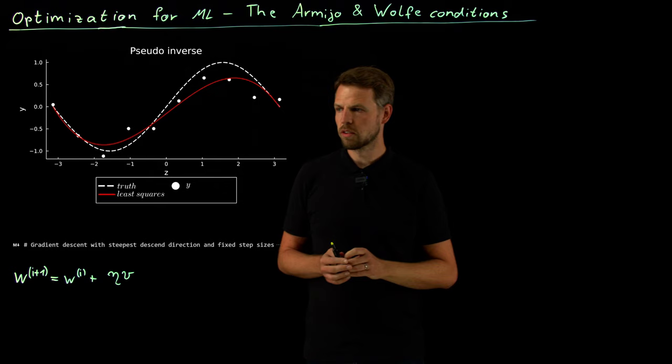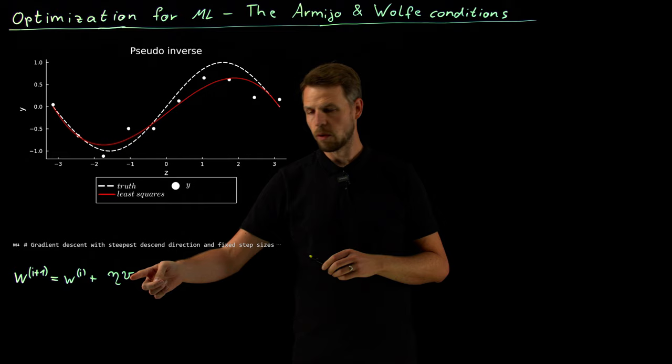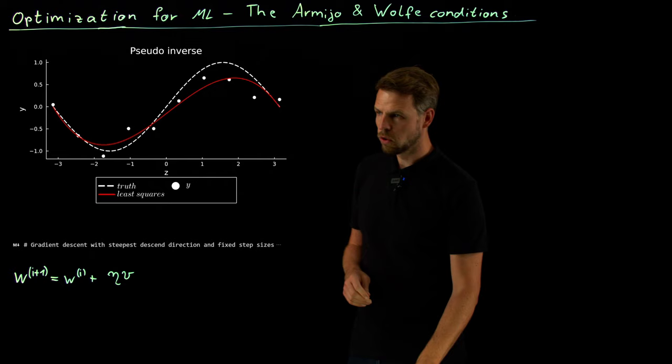Before we do so, let's consider this equation that we have. We have our current weight parameter and then we update this with a descent direction which we usually choose to be the steepest descent direction, so the negative gradient. But then we have this additional step length parameter, and we learned in the last videos that this is of vital importance.